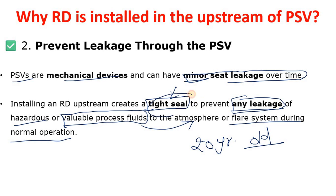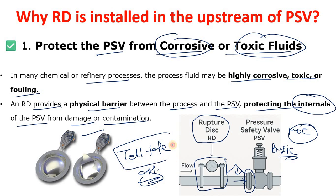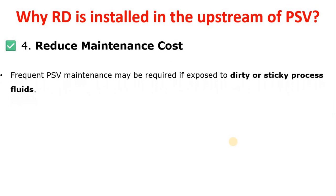You might ask: if an RD is installed and it bursts, how will you know? There is an arrangement called a tattle-tail assembly. If the RD bursts or starts leaking, the tattle-tail assembly will alert you so you know the RD has operated and your PSV internals are now in contact with the process fluid. You can then attend to and replace the RD.